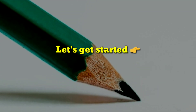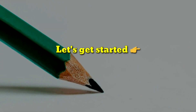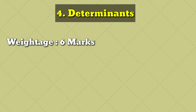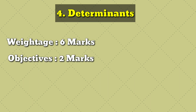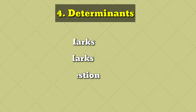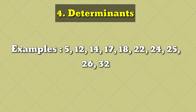We will start with Chapter 4. The total weightage is 6 marks — you will get two objective questions and four marks in the form of a four-mark question. First of all, the examples are very important. Please mark them in your book or keep the screen visible, because these questions will not be available in PDF.